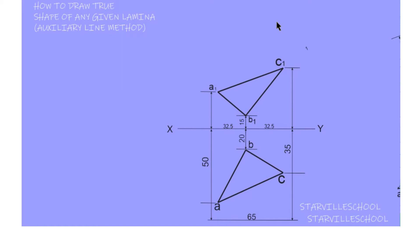In this method we will be solving one line of the triangle after the other. For example, the A1C1 line — we will solve for it, getting the true length of this line, and then we will do the same for all the other sides. Alright, so let's start.